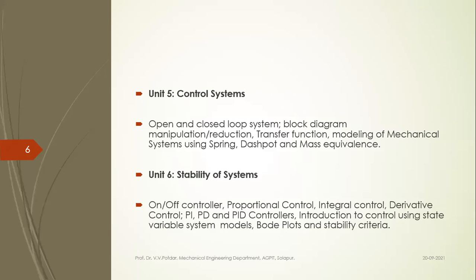Finally, in Unit 6 we'll study stability of systems and various types of controllers: on-off controller, proportional controller, integral controller, derivative controller, PI, PD, and PID controllers. We'll also study state variable system models and the construction methodology of Bode plots, and how to find out the stability of a given control system.